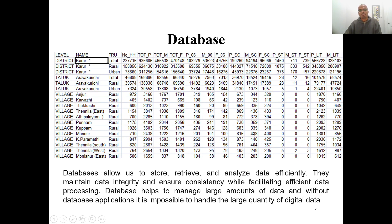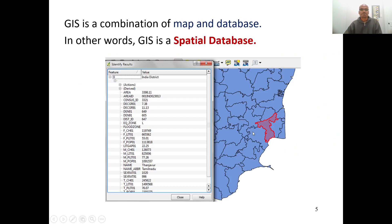On the other hand, databases allow us to store, retrieve, and analyze millions of records very efficiently. Database concepts help us maintain data integrity and facilitate efficient data processing. Since it has a proper structure, we can manage large amounts of data and handle digital data very effectively for various purposes. GIS is fundamentally a combination of both these two revolutionary aspects — the map and the database — and hence GIS is also called a spatial database.